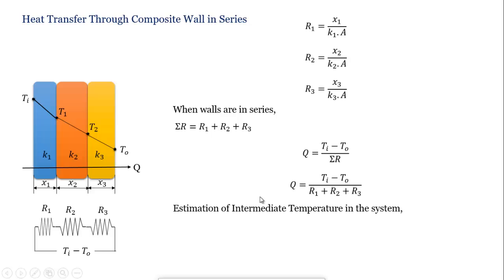To estimate the intermediate temperatures in the system, we find T1 and T2 using the formula Q equals Ti minus T1 divided by R1. We can substitute x1 divided by k1 times A for R1, or x2 divided by k2 times A for R2, to find the temperature values.